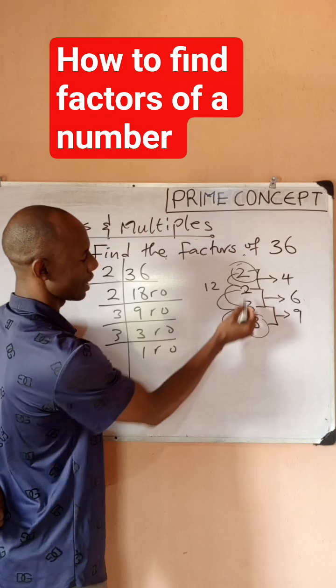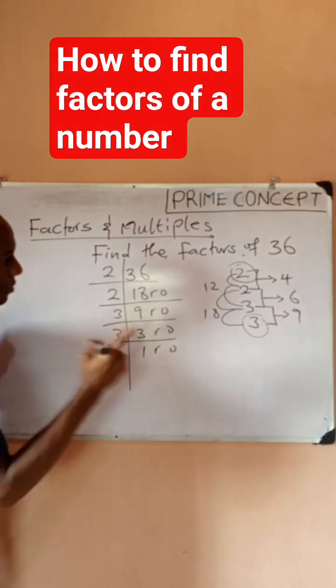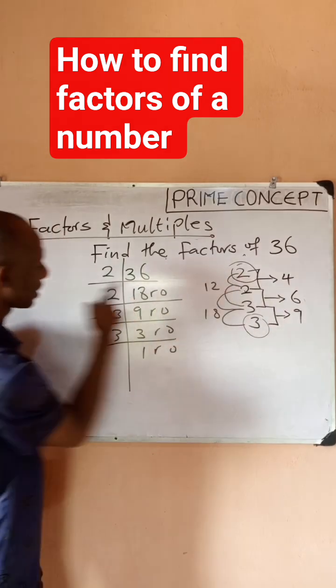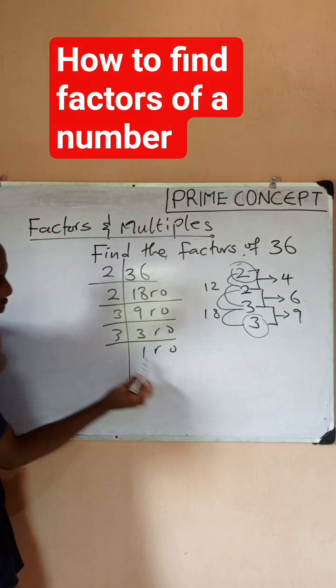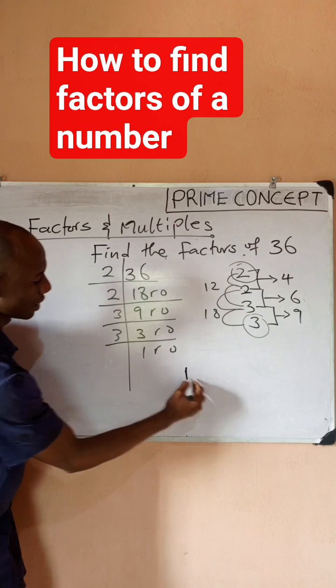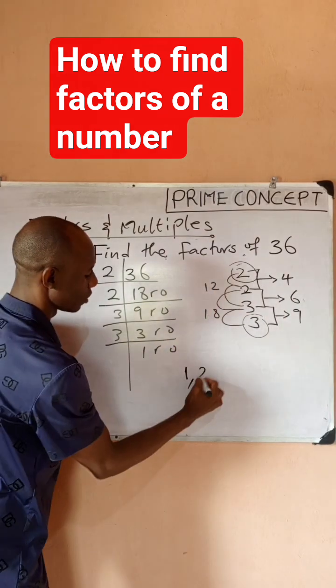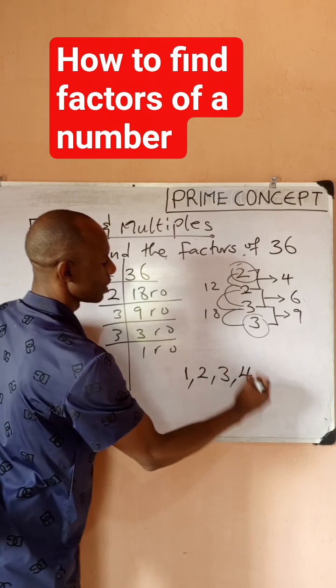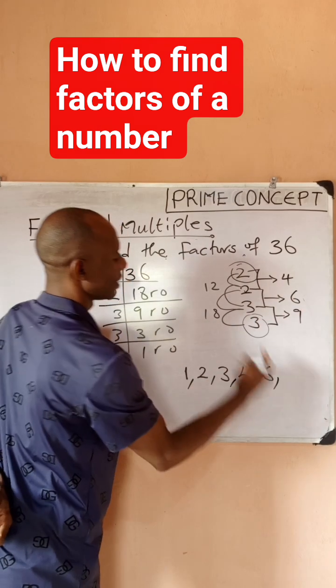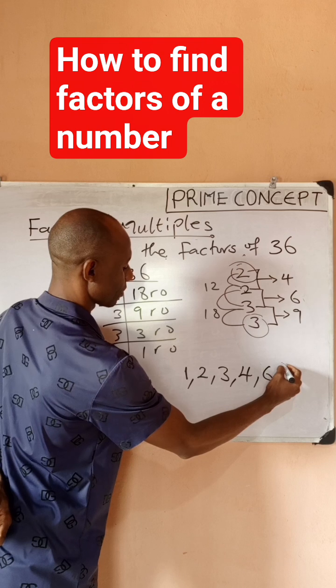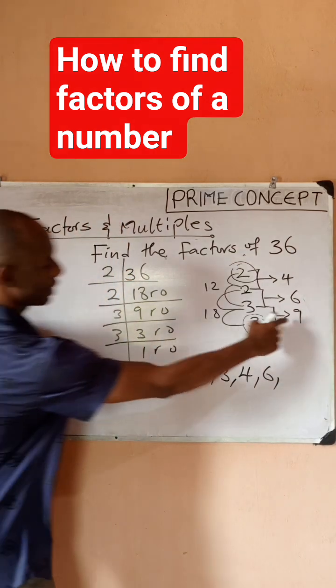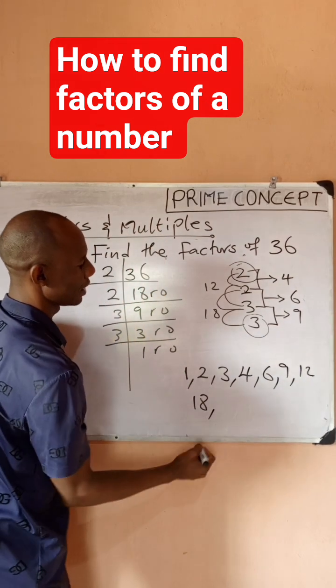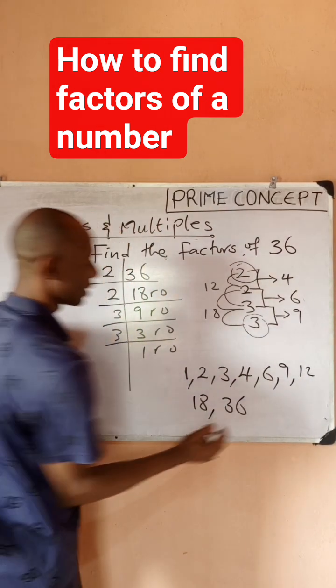So it means my factors, starting from this, would include: let's start by picking the smallest now, it's going to be 1, then the next small is 2, then the next is 3, the next is 4, the next is 6, then 9, then we'll have 12, then we'll have 18, then we'll have 36.